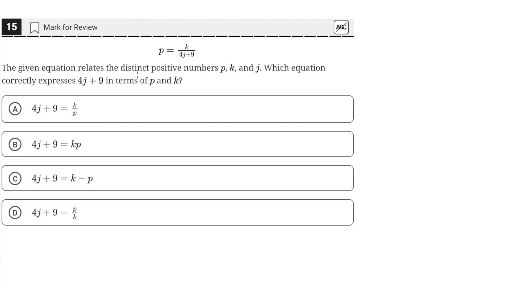The given equation relates the distinct positive numbers p, k, and j. Which equation correctly expresses 4j plus 9 in terms of p and k?